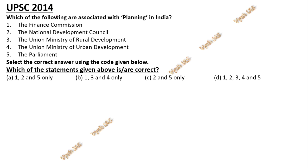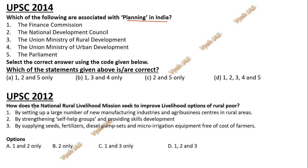As usual I'll show you two previous year UPSC questions. First: which of the following are associated with planning in India — the Finance Commission, the National Development Council, the Union Ministry of Rural Development, Union Ministry of Urban Development, and the Parliament? Second (UPSC 2014): how does the National Rural Livelihood Mission seek to improve livelihood options of rural poor? These questions have been repeated in different formats, which is why they are important.